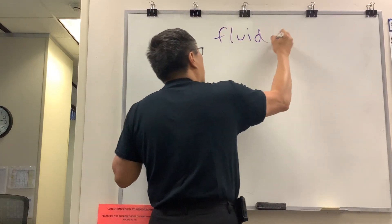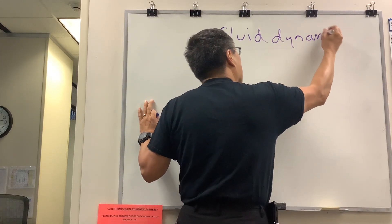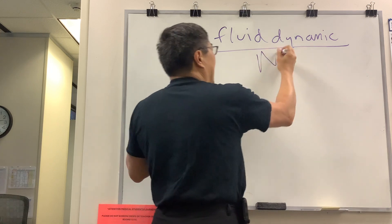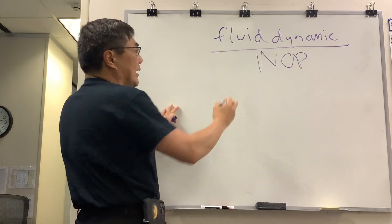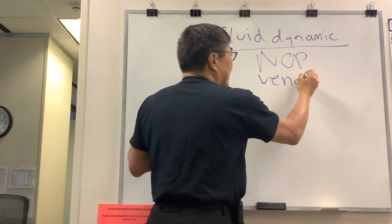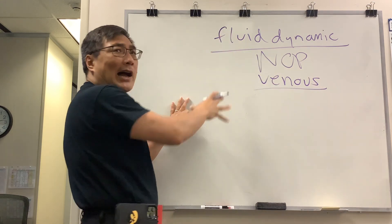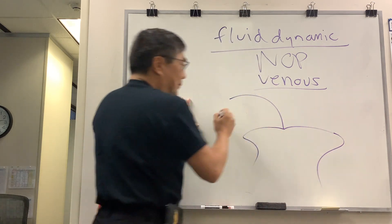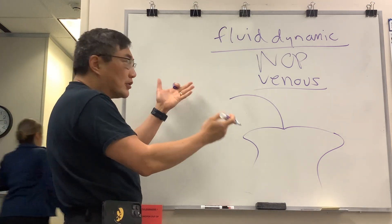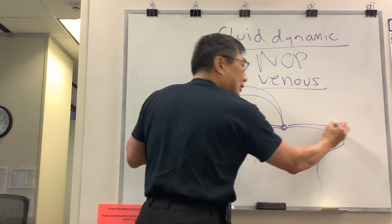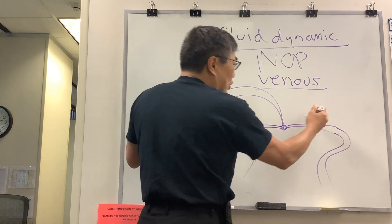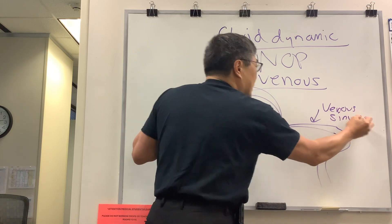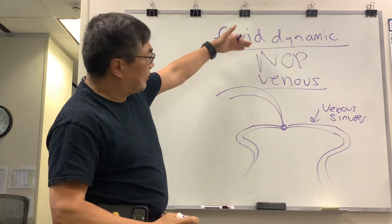Someone wanted to know about how we're using flow and fluid dynamics and physical properties in terms of neurology. On the venous side, we're going to apply these physical properties of fluids to our venous outflow system. This happens to be a diagram of the superior sagittal sinus, the torcula, the transverse sinus, the sigmoid sinus, and down the jugular. When looking at venous sinuses, some of the things we see are dependent on flow.